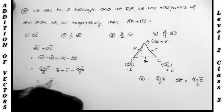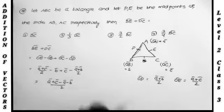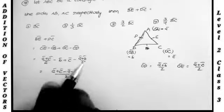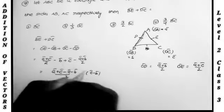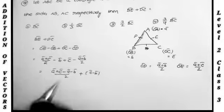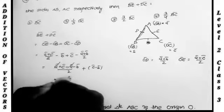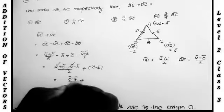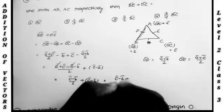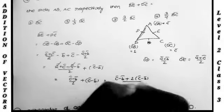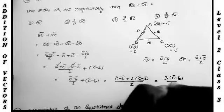Now writing the expression: A bar plus C bar by 2 minus B bar, plus C bar minus A bar plus B bar by 2. Taking LCM: A bar cancels out. We get C bar minus B bar by 2 plus C bar minus B bar, which becomes C bar minus B bar plus 2 into C bar minus B bar, all over 2. That gives 3 into C bar minus B bar by 2.